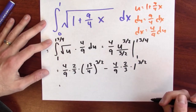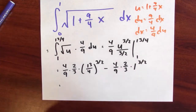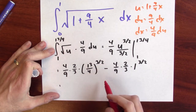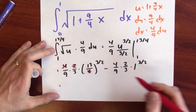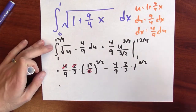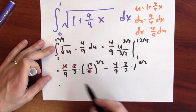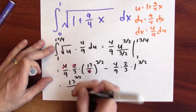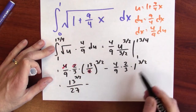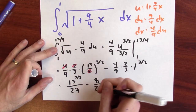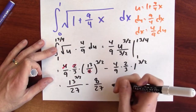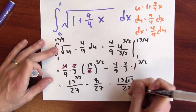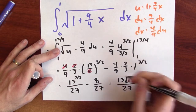I can simplify this a little bit more. 4 times 2 is 8, but that's also 4 to the 3 halves power, so I can cancel those things. Doing the arithmetic: 13 to the 3 halves over 9 times 3 is 27, minus 8 over 27 times 1. If you don't like the 3 halves exponent, I can write this as 13 times the square root of 13 over 27, minus 8 over 27.